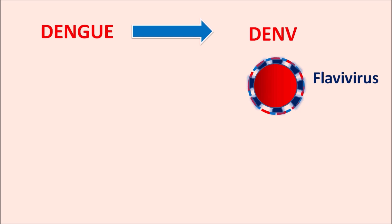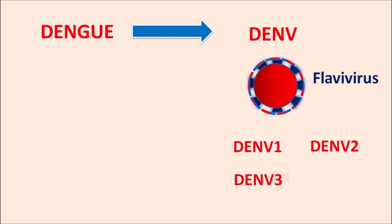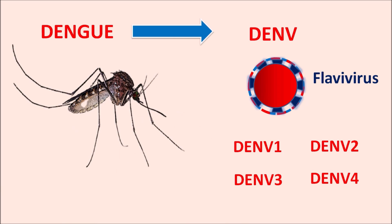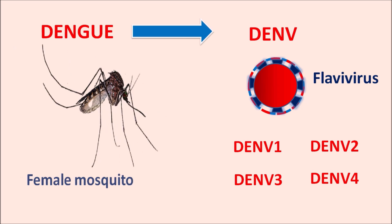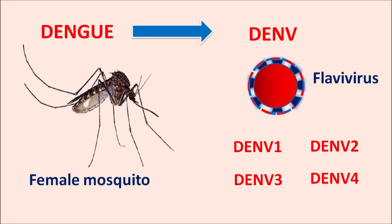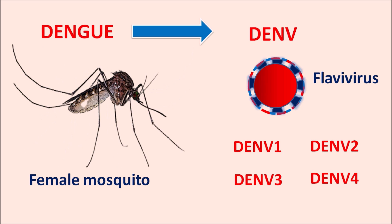Dengue virus can exist in four genotypes: dengue virus 1, dengue virus 2, dengue virus 3, and dengue virus 4. All these flaviviruses can produce dengue fever, and this virus is transmitted by the female mosquito belonging to the species Aedes aegypti.